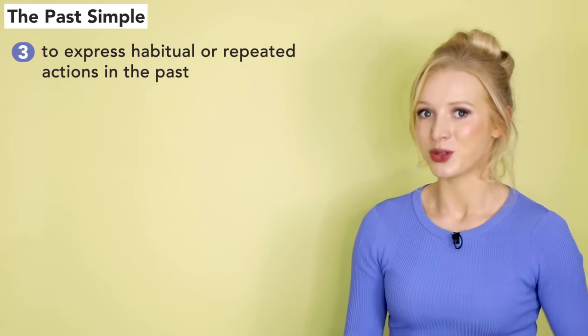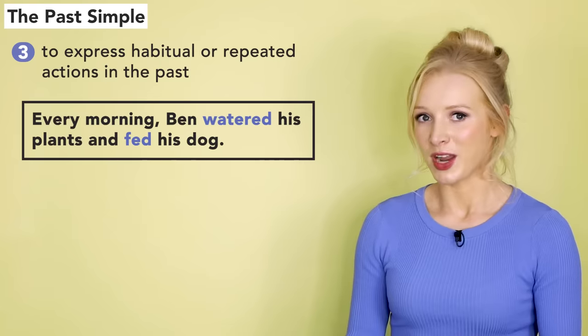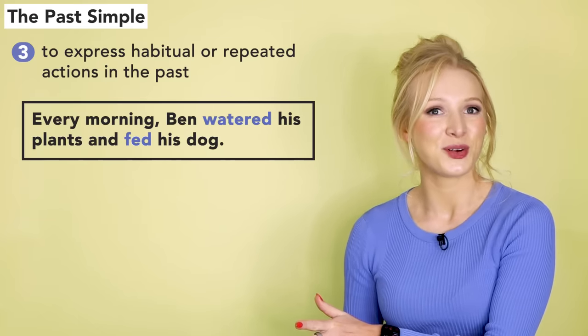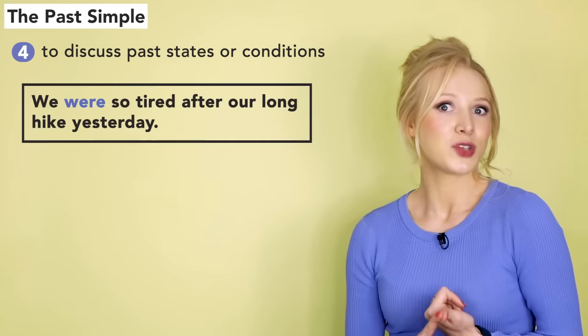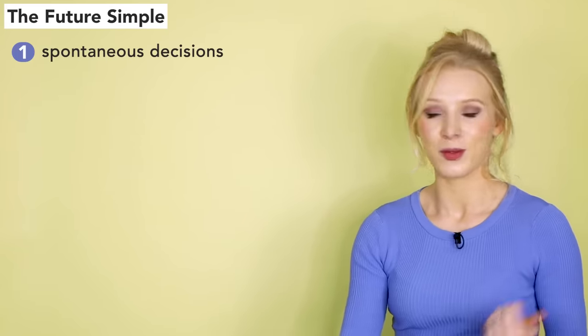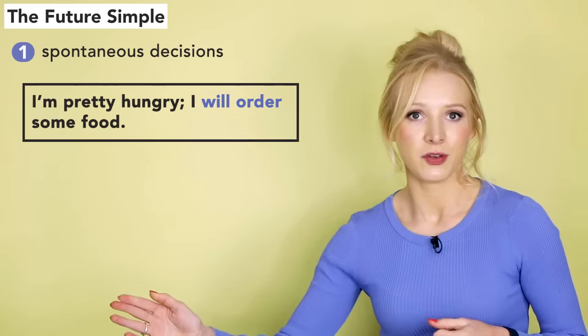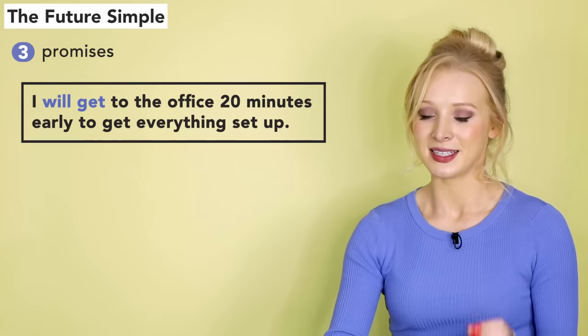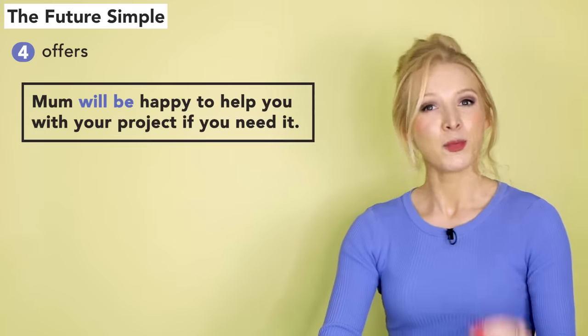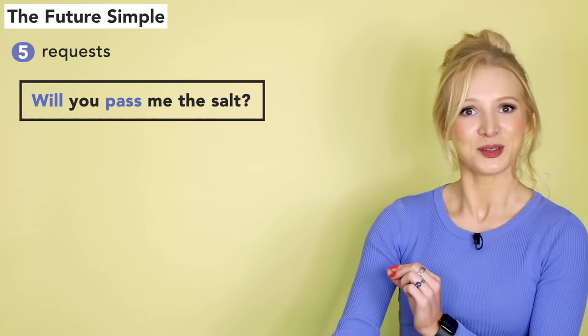It's used to express habitual or repeated actions in the past: 'Every morning, Ben watered his plants and fed his dog.' And it's used to discuss past states or conditions: 'We were so tired after our long hike yesterday.' Next up, we have the future simple tense. Let's start with spontaneous decisions — for example, 'I'm pretty hungry, I will order some food.' Predictions: 'The weather forecast says it will rain tomorrow.' Promises: 'I will get to the office 20 minutes early to get everything set up.' Offers: 'Mum will be happy to help you with your project if you need it.' And requests: 'Will you pass me the salt?'